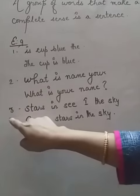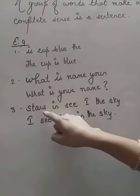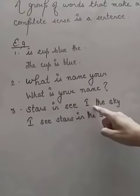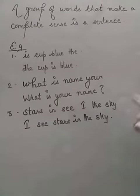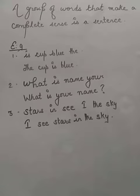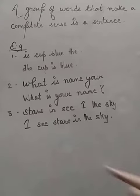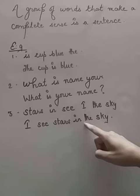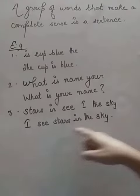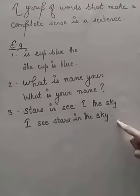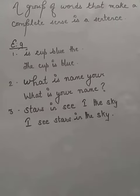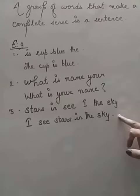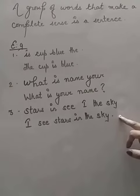Let us go to example number three. 'Stars in sea, I, the sky.' Six words, but they are not making sense. Let us rearrange the six words: 'I see stars in the sky.' This cannot be considered a sentence, but this rearranged version can be considered a sentence.